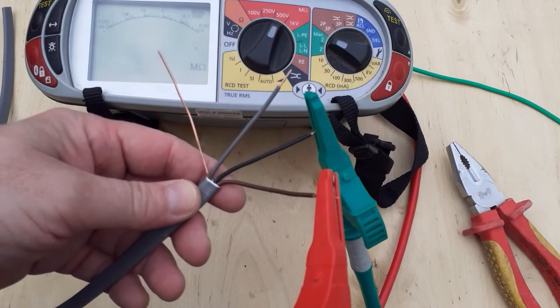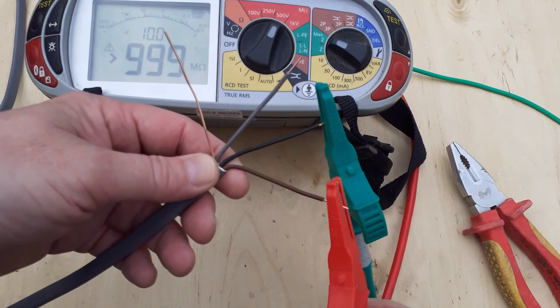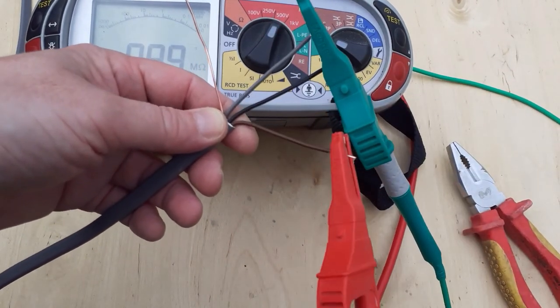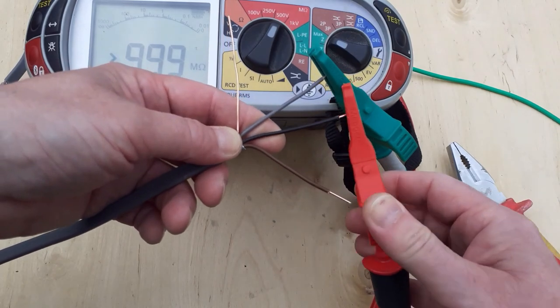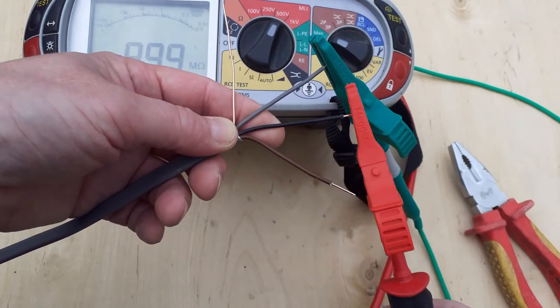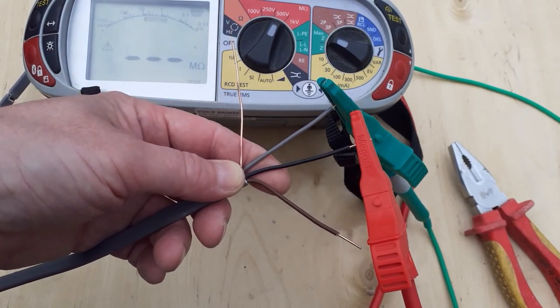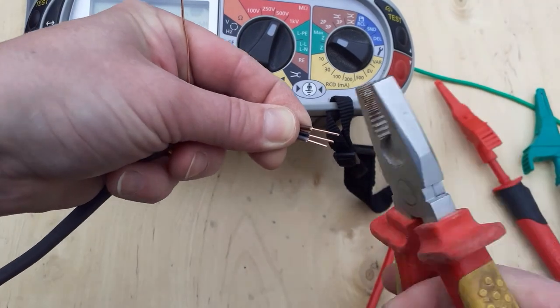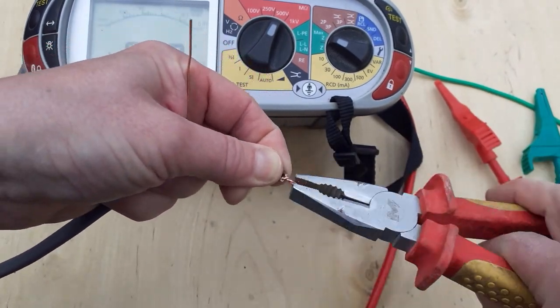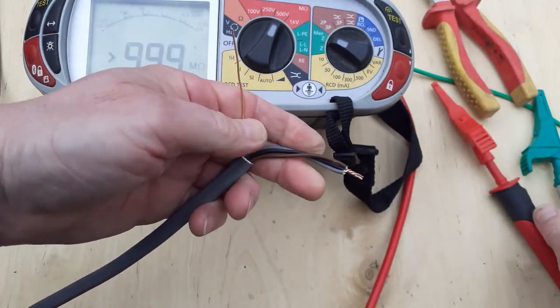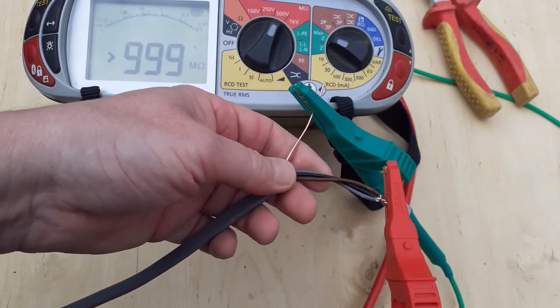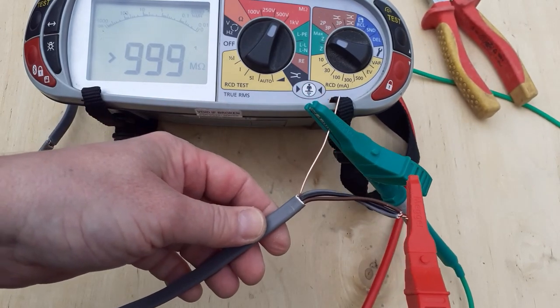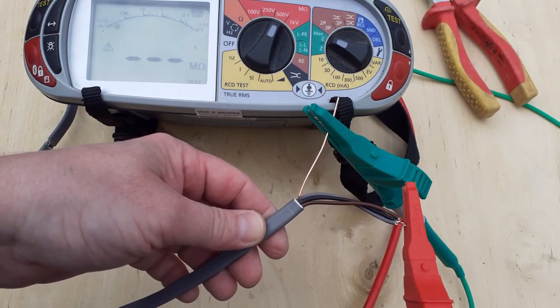Here I'm testing multi-core cable. It's brown to black, brown to grey, black to grey. You see I'm pressing the clip on there so I get a nice tight connection. Make sure you go through all the combinations, and if there's no insulation resistance problems between the conductors, we can do a combined test to earth. There we go, 999 megaohms. That cable looks like it's in good condition.